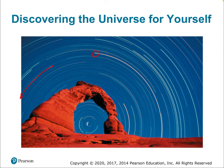Circumpolar stars are visible as soon as it's dark enough, and they stay up the entire night. If the night is long enough, they complete a full circle. Stars very close to the celestial North Pole, like Polaris, are examples. Polaris isn't exactly at the celestial North Pole, so it completes a very tight circle, but we still call it the North Star. Other stars a bit further out complete larger circles.